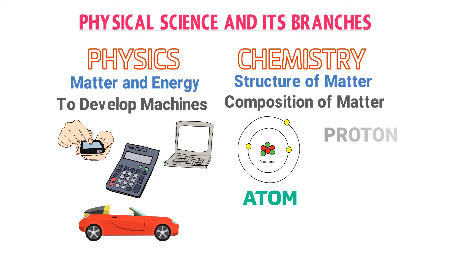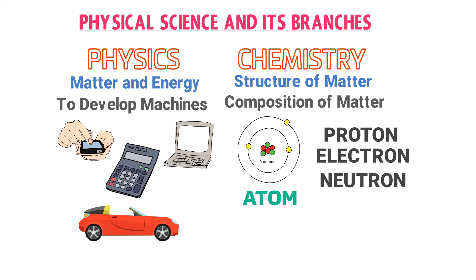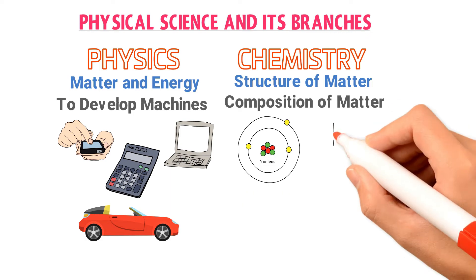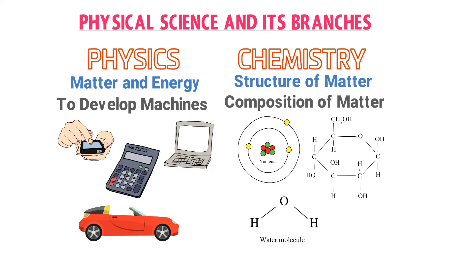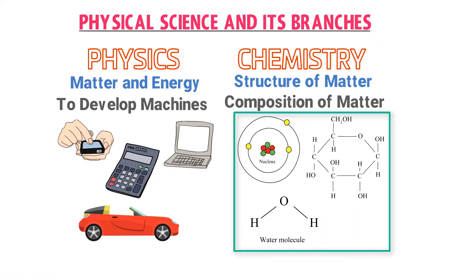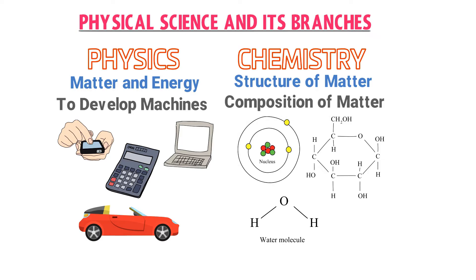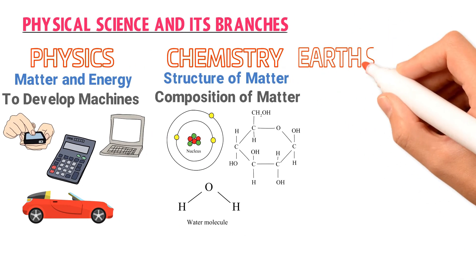An atom is made up of three particles: proton, electron, and neutron. Secondly, chemistry teaches us that matter like sugar is made up of carbon, hydrogen, and oxygen. Thirdly, chemistry teaches us that when oxygen and hydrogen are combined together chemically in a fixed ratio by mass, we get water. These are the three important areas which chemistry covers.